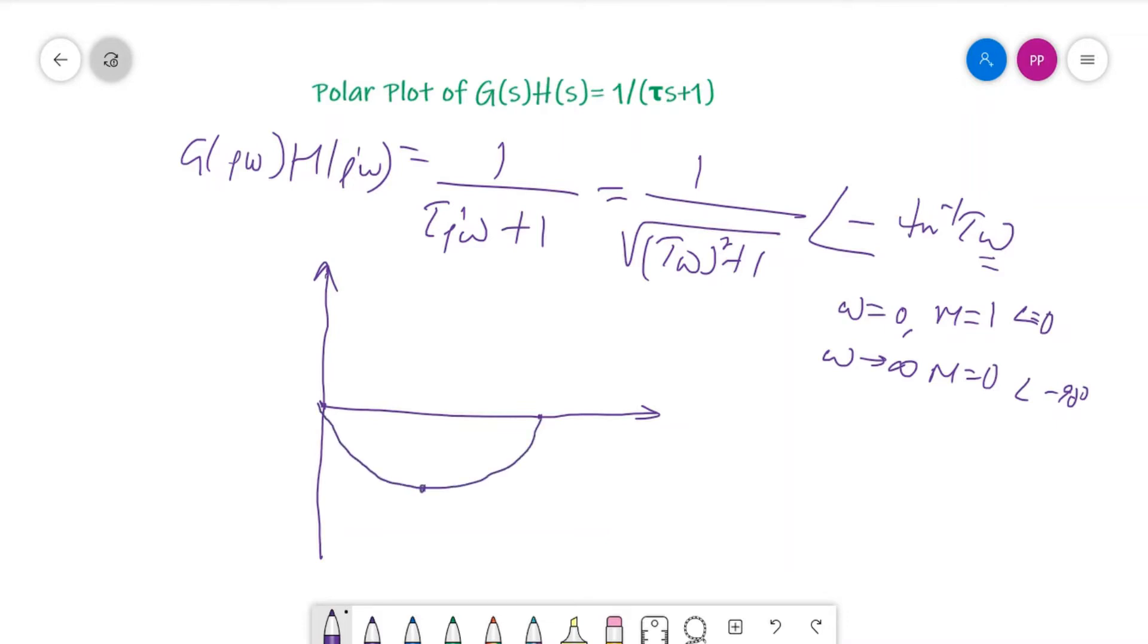Naturally this polar plot we have already discussed, but just for recapitulation I am drawing it. We have a frequency starting from ω equal to 0 to ω tends to infinity. In between there is a frequency ω equals to 1/τ. This is the form of a semicircle. Don't forget to write the real part of G(jω)H(jω) and the imaginary part of G(jω)H(jω).